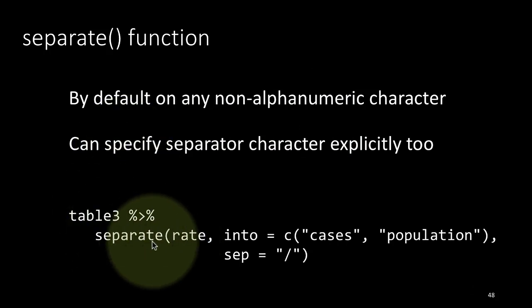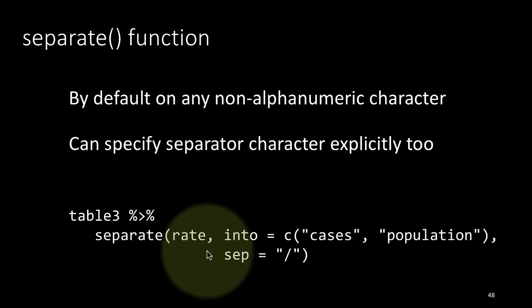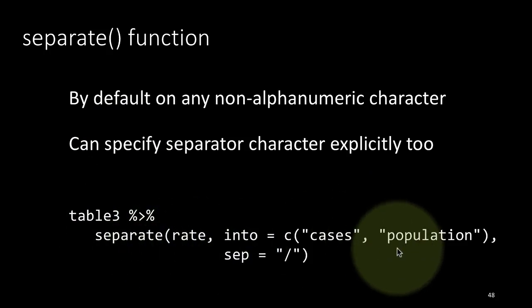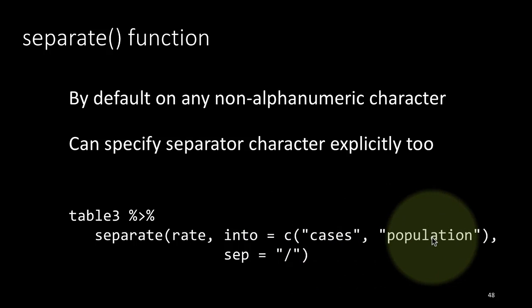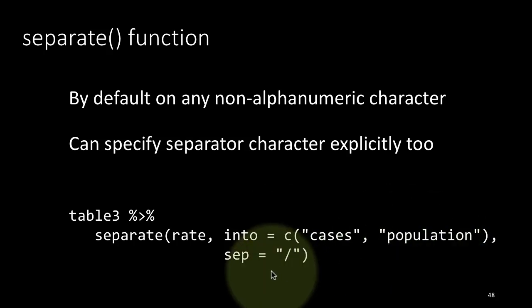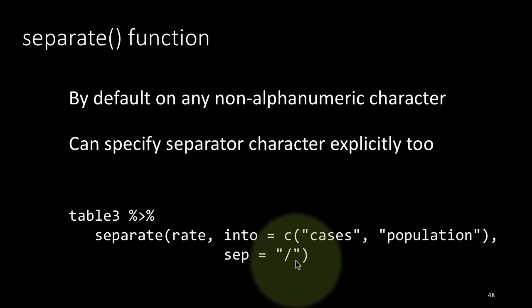We could write the same function as: separate(rate, into = c('cases', 'population'), sep = '/'). The new columns are specified as a character vector and sep is set to forward slash. We didn't have to do this because the slash was the only non-alphanumeric character in that column, but we can specify it explicitly if we want.